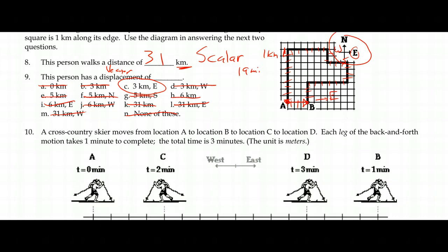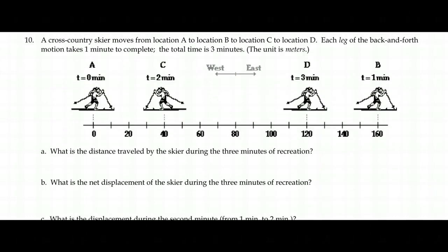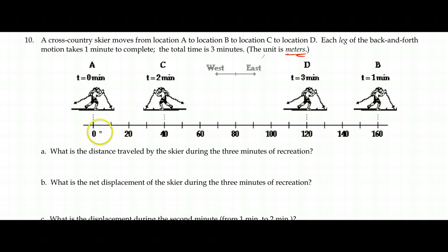Here's another graphic — a skier going back and forth. This time we have a number line that tells us zero meters is over here and 160 meters is over there, with everything marked out in scale where each line spacing is 10 meters. That's very helpful for keeping track of position or location, which is a big part of your displacement.